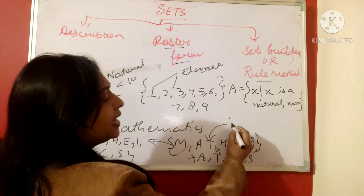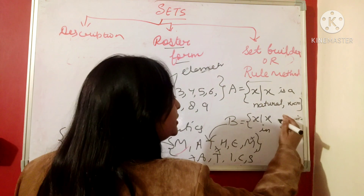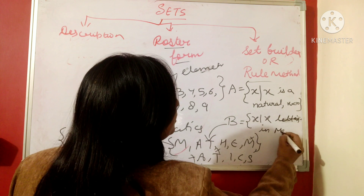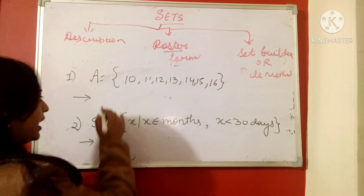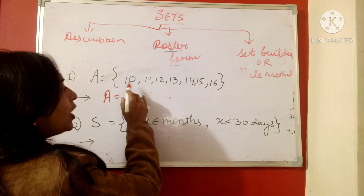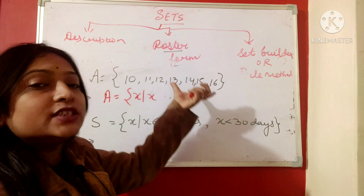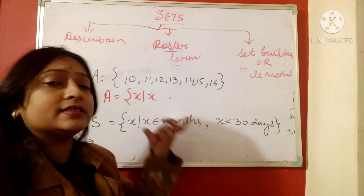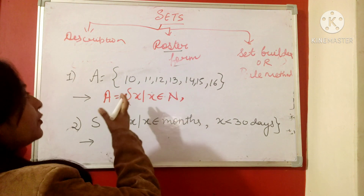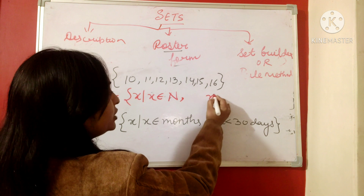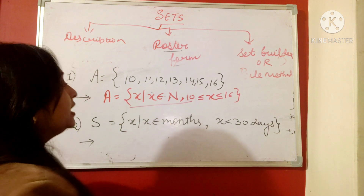For the word 'mathematics,' the set builder form would be: B = {x | x is a letter in mathematics}. Now if we have a set A in roster form as {10, 11, 12, 13, 14, 15, 16} and need to write it in set builder form: A = {x | x belongs to natural numbers, 10 ≤ x ≤ 16}. It's very simple to write the set builder form from the roster form.